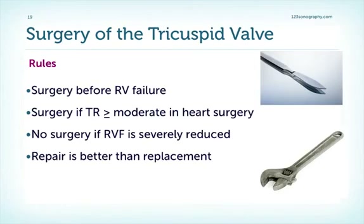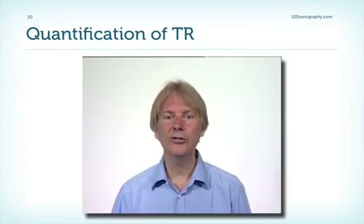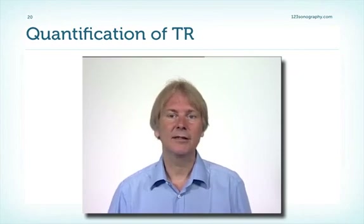Just a few words about the indications for surgery in tricuspid regurgitation. You have to operate before right heart failure occurs. We should operate tricuspid regurgitation if it is moderate or greater when heart surgery is performed for other reasons, for example bypass surgery or mitral valve surgery. We should not perform surgery if right ventricular function is severely reduced. And repair is better than replacement. This concludes the topic of tricuspid regurgitation, but the next chapter will deal with other pathologies of the tricuspid valve.